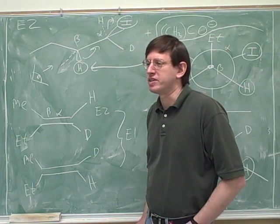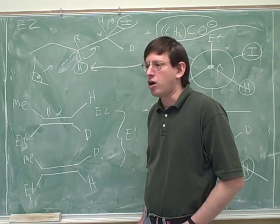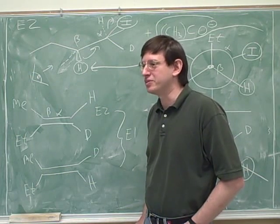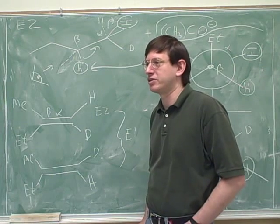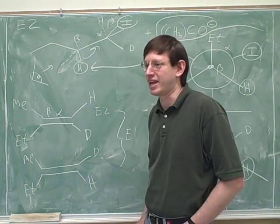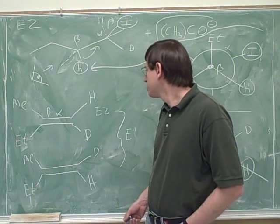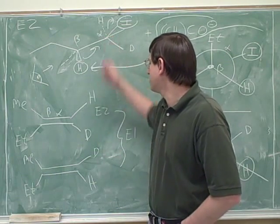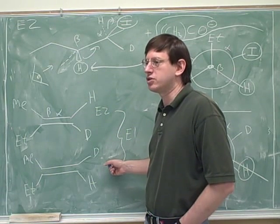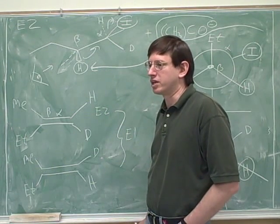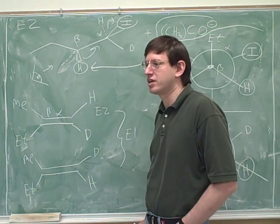That would come up if he did something like, draw all possible products. That would be a clue that maybe there's more than one product. Especially if he says draw all possible products including stereoisomers, or something like that. That's a clue that there's different arrangements. So in this case we saw that for this E2 reaction we only got the one product, but the E1 would give us these two stereoisomers.